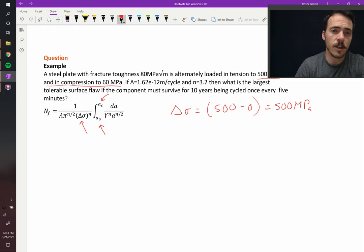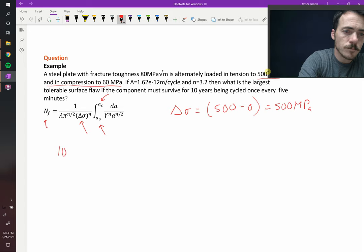A and N are given, and then NF, the number of cycles till failure. Well we know that it has to survive 10 years, and it's being cycled once every five minutes.